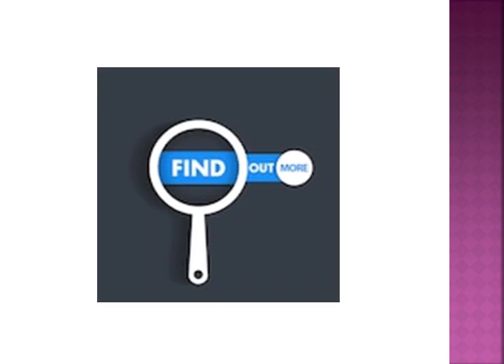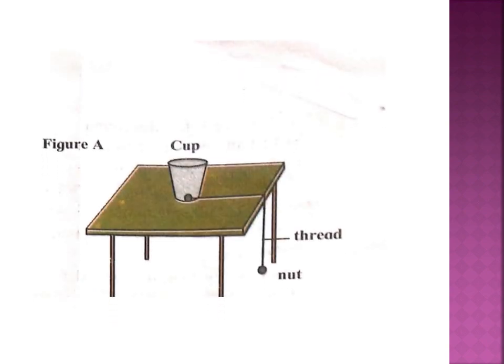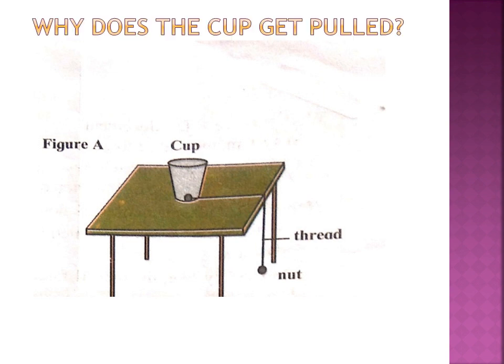By trying an experiment we will find more about positive, negative, and zero work done. In Figure A, a cup is placed on the table with a thread tied to two nuts — one nut inside the cup and the other hanging freely over the side of the table. The force applied on the thread is downward and the cup also moves downward, so the applied force and displacement are in the same direction — this is positive work done.